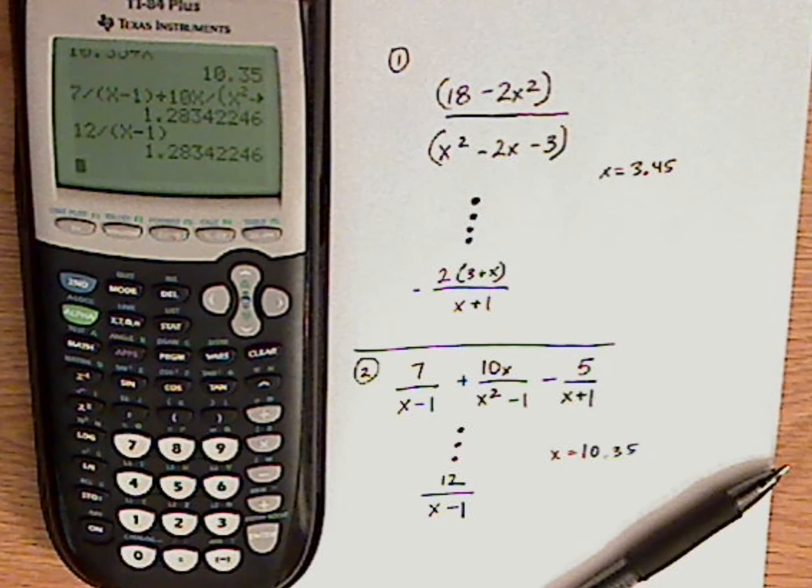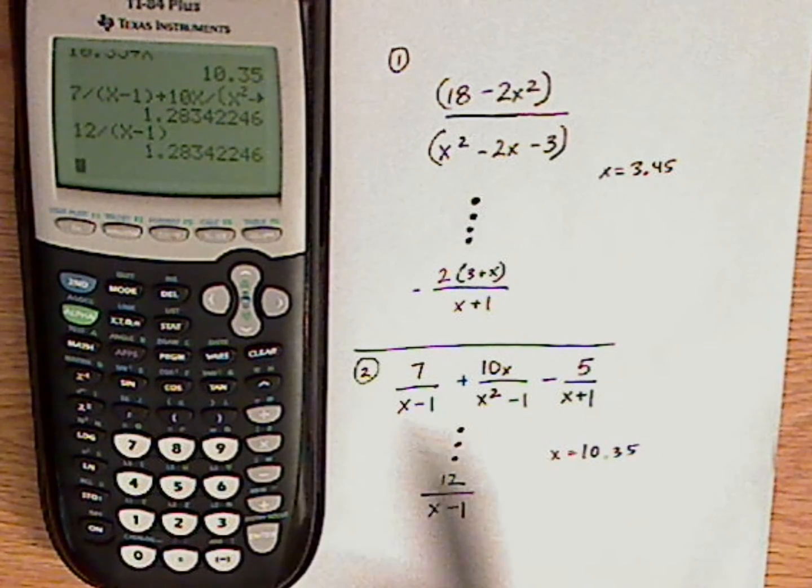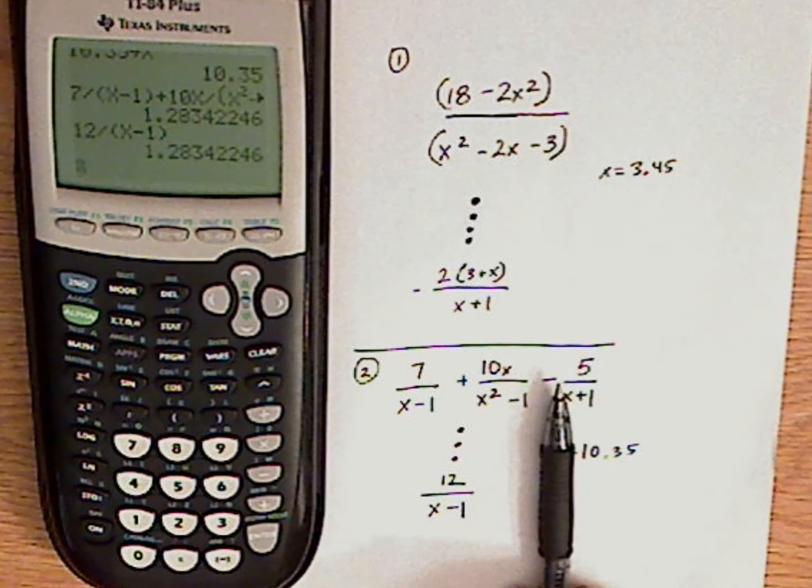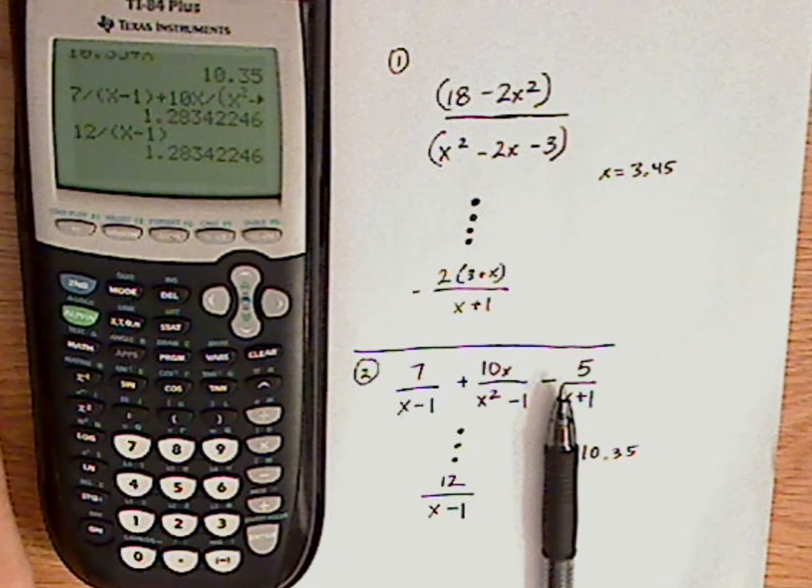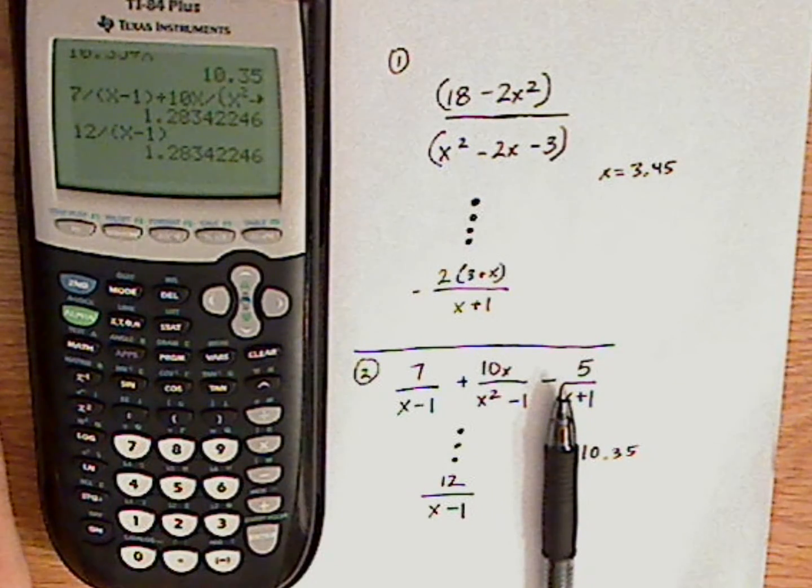And it's the same exact thing. So that means this whole thing is equal to this. And that's how you check your answer using a calculator.